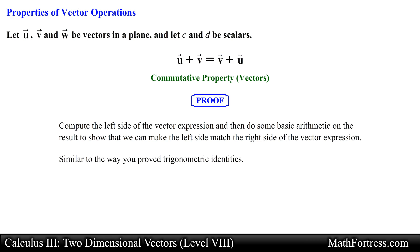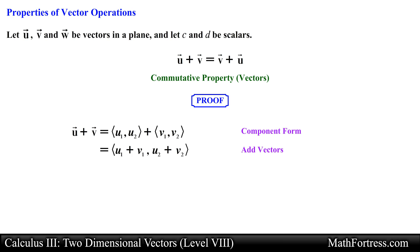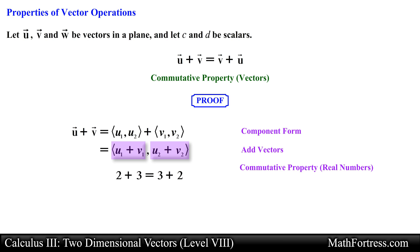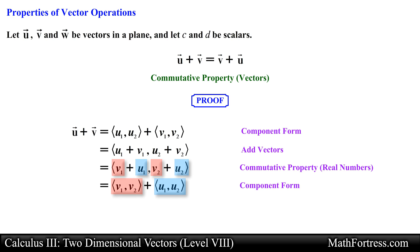Similar to the way you proved trigonometric identities, for this property we simply start with the left hand side of the expression and break the vectors into their component forms. Next we go ahead and add the vectors component wise. For the next step we use the commutative property of addition for real numbers and rearrange the order in which we add the components, since addition of real numbers is commutative — for example, 2 plus 3 yields the same answer as 3 plus 2. Notice that we are not rearranging the vectors but rather the components, which are real numbers. This new arrangement is nothing more than adding the components of vector v and vector u. Lastly, these rearranged components represent vector v and vector u respectively, and this completes the proof.